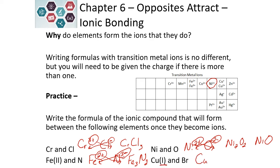Copper — the Roman numeral tells us that it has a charge of plus one, because copper can actually form multiple charges: plus one or plus two. Our bromine is a minus one. We just need one of each to balance the charge. So we would have CuBr.